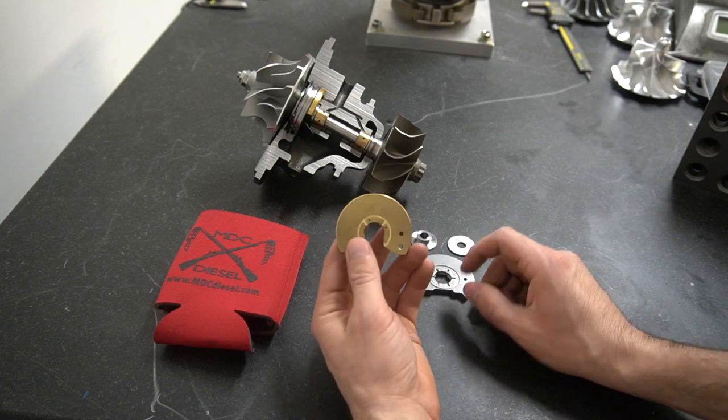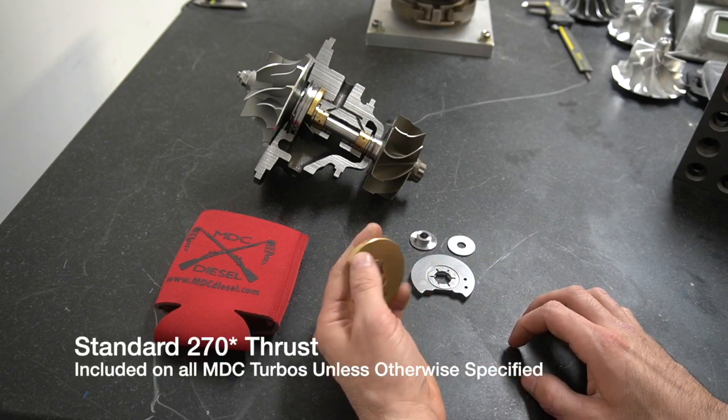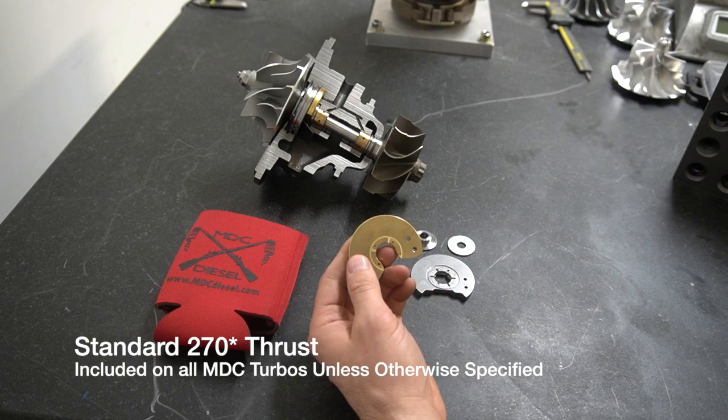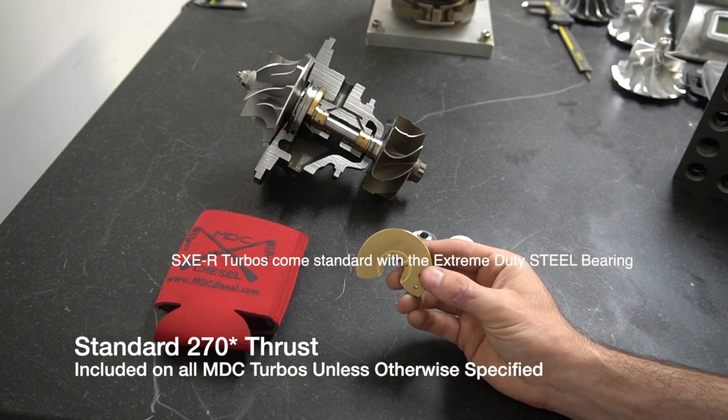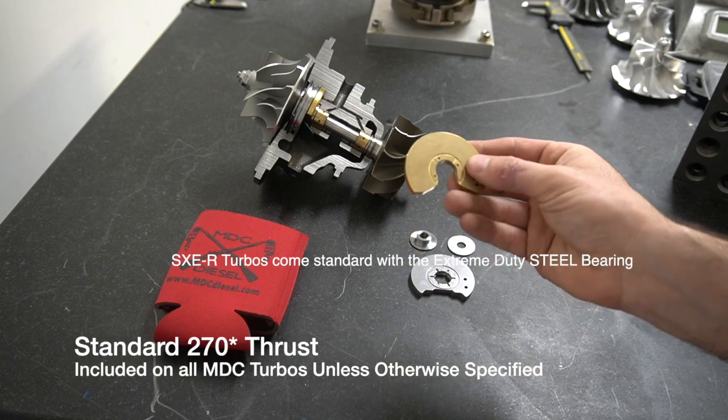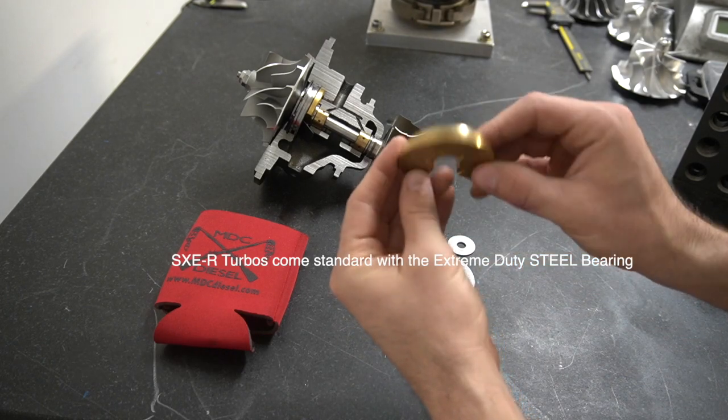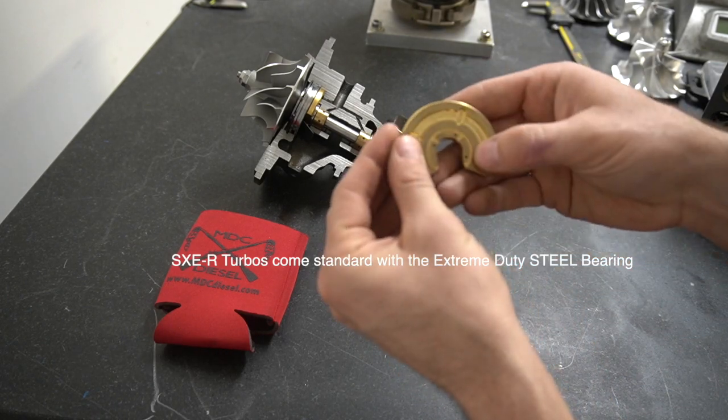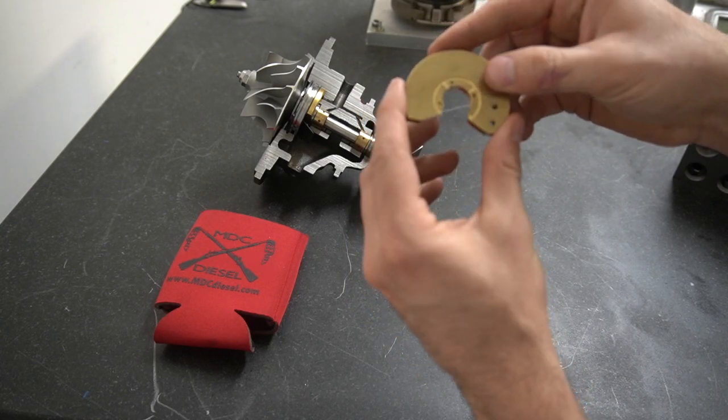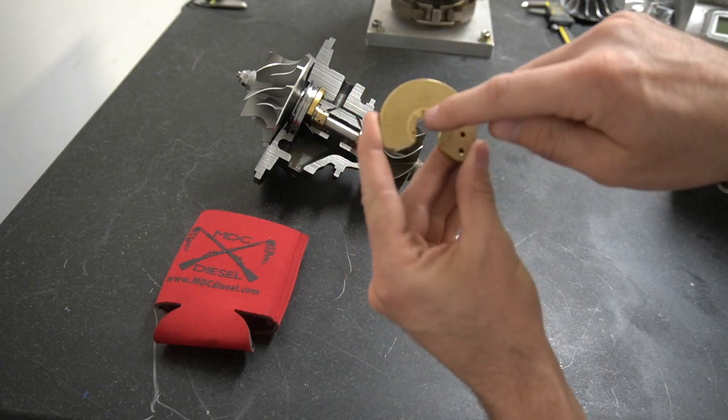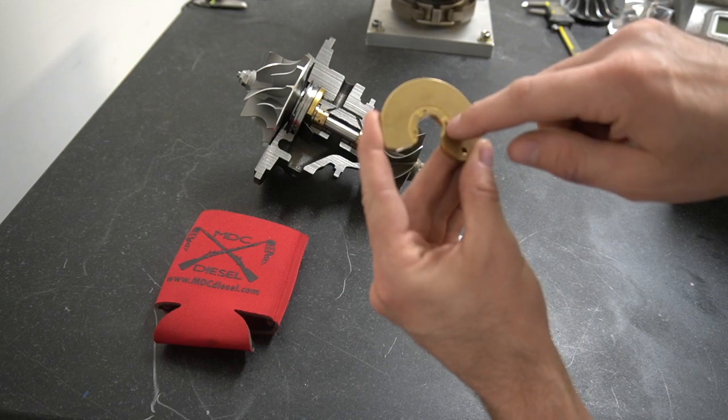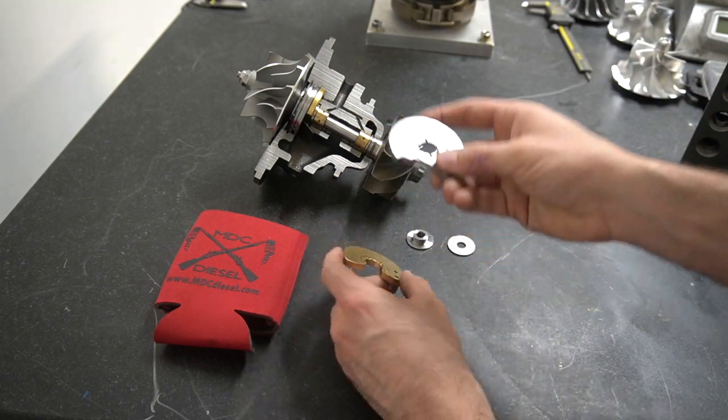This is our standard thrust bearing that comes on all of our chargers unless you upgrade it, aside from our competition series chargers. This bearing is a brass 270 degree thrust bearing. The reason you call it a 270 degree bearing is because there's only 270 degrees of coverage, not a full 360 degrees like this one here.